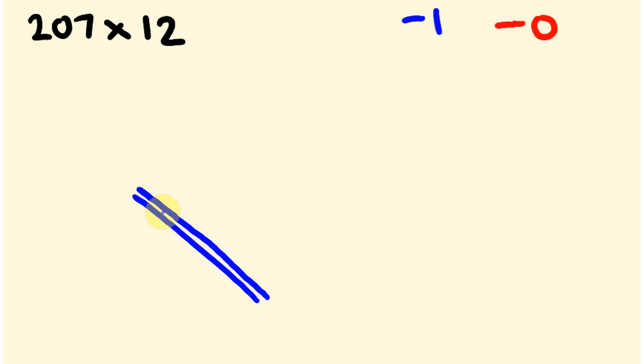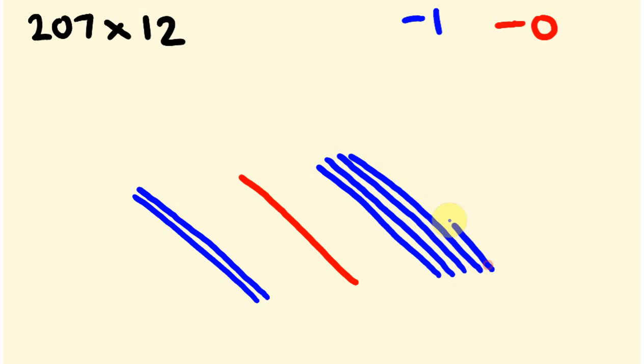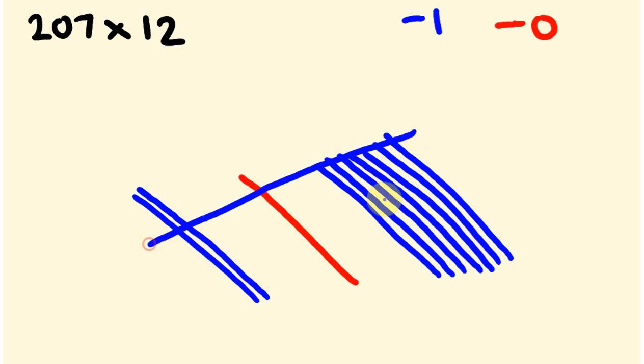So when I do 207 now, what I'm going to be doing is, 200 I'm going to do one, two, for the hundreds part, for that zero part, I'm going to put a zero like that, just a red line, and the seven, I'm going to draw seven lines. And 12, we had 1, and 1, 2.